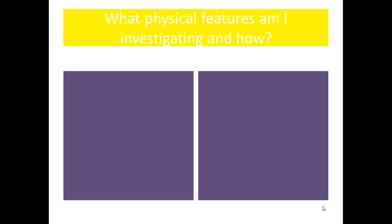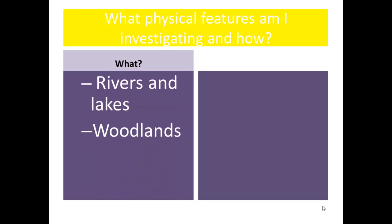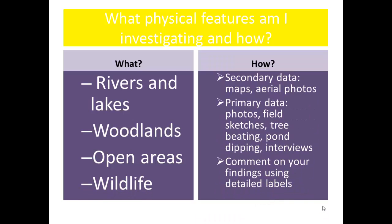Finally, to summarise, we need to think about the physical features that we are going to investigate and we need to remember how we are going to investigate them. Through secondary data, maps and aerial photos, primary data, our own photos, field sketches, tree beating, pond dipping, interviews and so on. Remember that you must comment on your findings and using detailed labels is a really good way to do this.